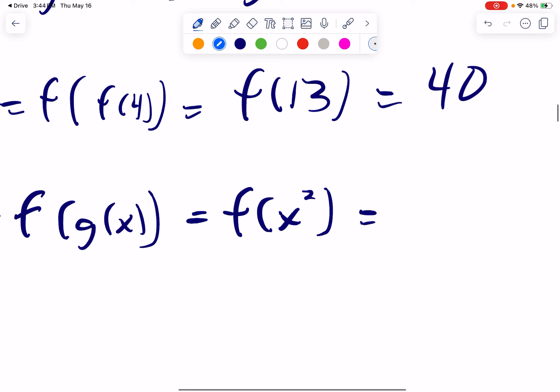It's 3 times the input, and then I add 1. So if the input is X squared, then I have 3 times X squared, and then I add 1. 3X squared plus 1.